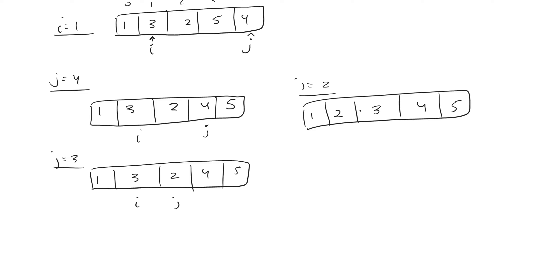This array is already in sorted order, so there's really no need to carry on, even though the algorithm would carry on unless you wrote something to stop it. If we were to continue when I goes from one to two, I would be here and we'd start J here and go down, but we wouldn't make any changes because everything is in sorted order. The key property of bubble sort is that every time I increments, everything behind I is in sorted order. If we can assume that, a pretty easy proof comes out from this.